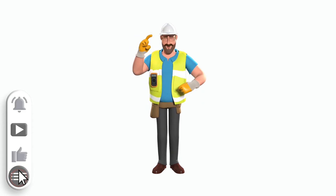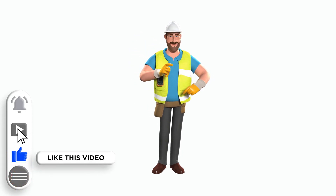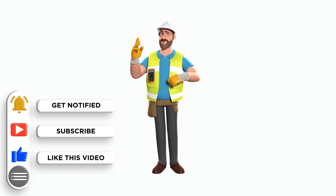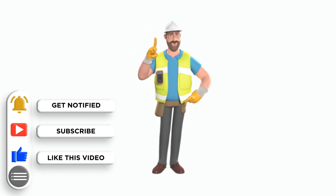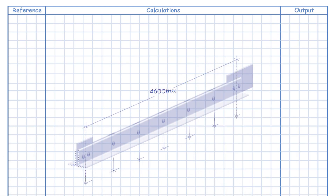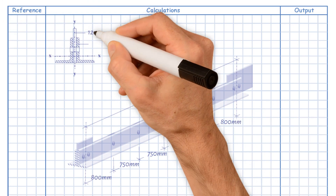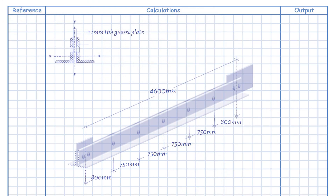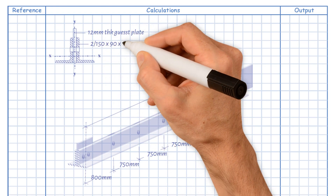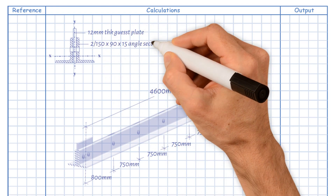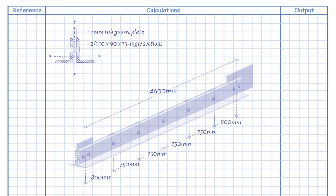Welcome back to the channel. In today's video, using a worked example, we will explain how to determine the maximum compressive load of angle sections with 4.6 metre long legs connected back to back and double bolted at the ends to 12 millimetre thick gusset plates. We have a compression member of a lattice girder comprising 250 by 90 by 15, S275, connected back to back. We need to determine the maximum compressive load which can be carried by the member.